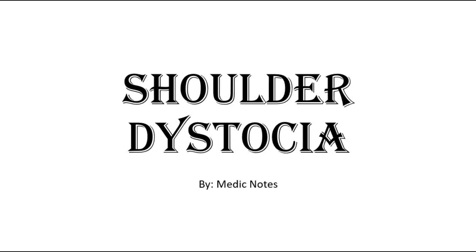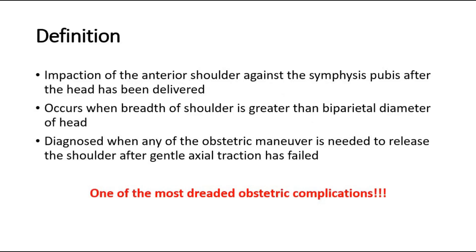Welcome back to another video of Medic Notes. This video will be on shoulder dystocia. The definition of shoulder dystocia is when there is impaction of the anterior shoulder of the baby against the symphysis pubis of the mother after the head has been delivered.